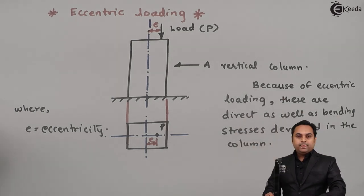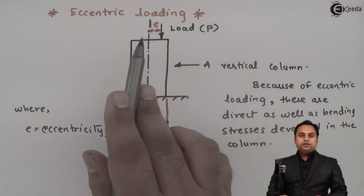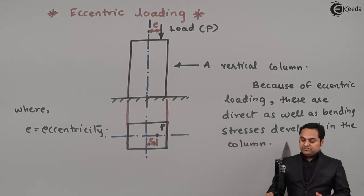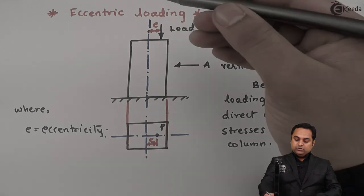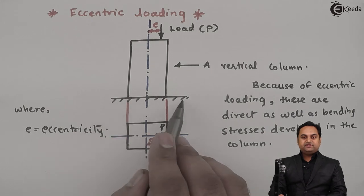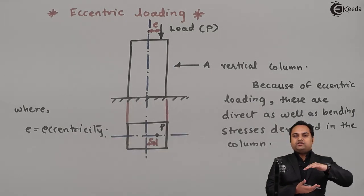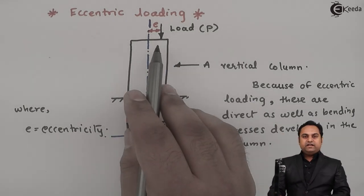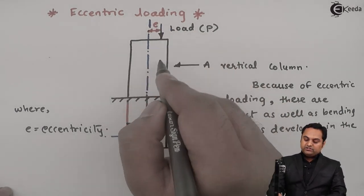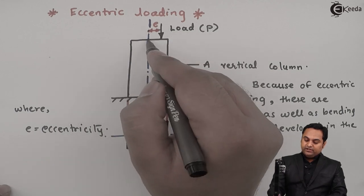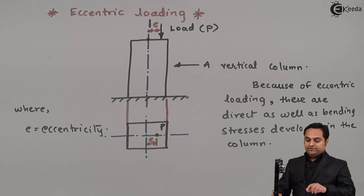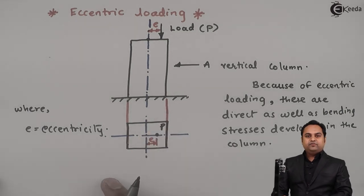When we have eccentric loading, there is direct as well as bending stress which is developed in the column. Because of the load W acting in the downward direction and the ground being fixed, there is compression of the column, which is called as direct stress. When we take the moment of this load, that is P into e, about the center of the column, that produces a bending moment, and because of that bending moment there will be bending of the column.